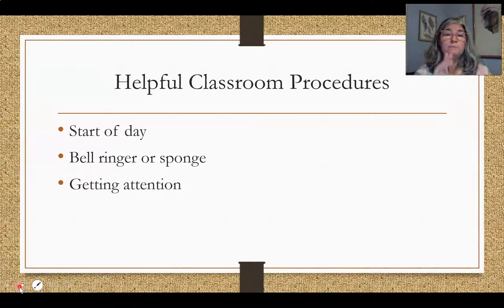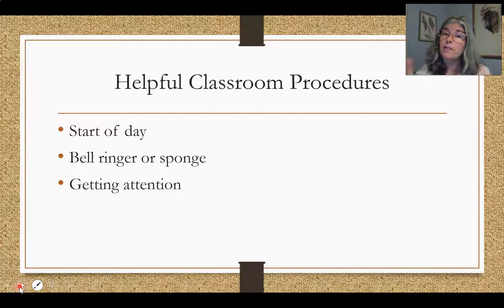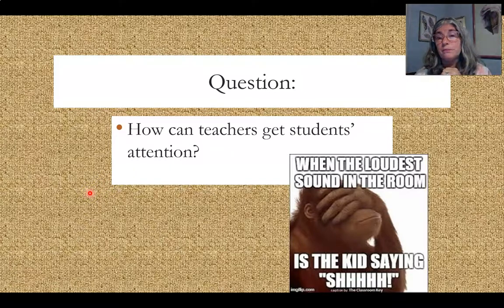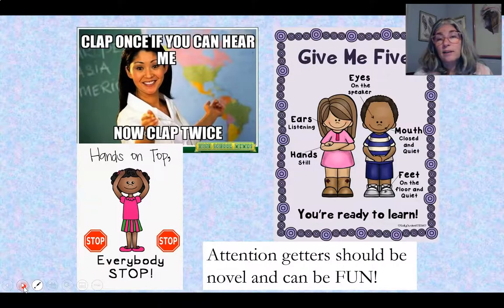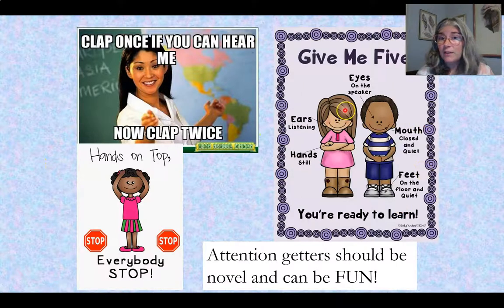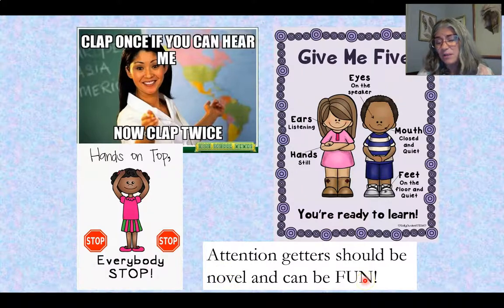Procedure number three: getting students' attention. We've seen over and over again the importance of this when it comes to learning — think of the information processing memory model. If students aren't paying attention, they'll never get information in their head in the first place. There are a lot of things you can do, depending on the grade and age of your students. Some fun approaches: 'Clap once if you can hear me, now clap twice,' 'Hands on top, everybody stop,' or 'Give me five.' Attention getters should be novel and fun — why not make it enjoyable?